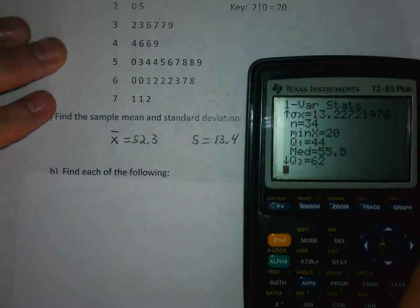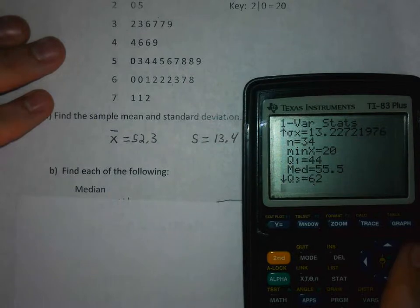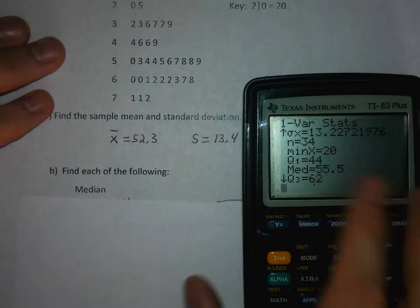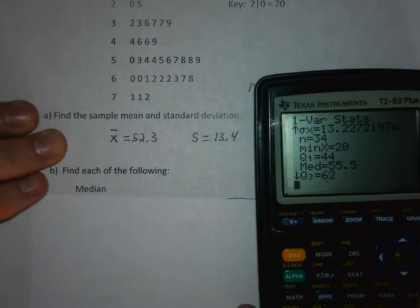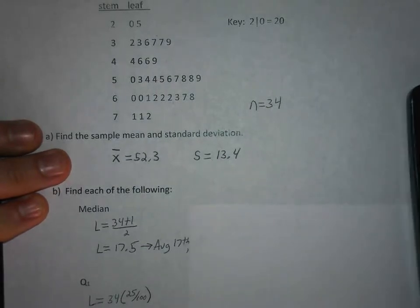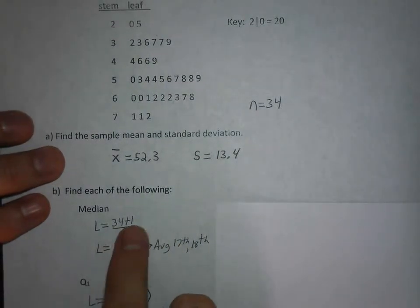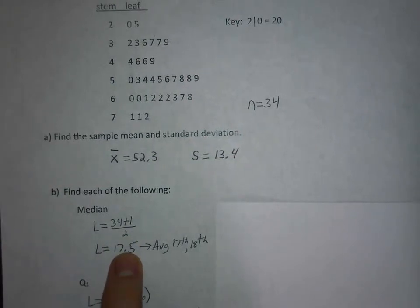The next question says find each of the following: find the median. Well the median is right there on the calculator: 55.5. Remember the other way to find the median is to find its location by doing L = (n+1)/2, so that's (34+1)/2, that gives you 17.5, which means you have to average the 17th and 18th data values.